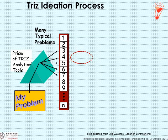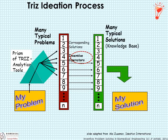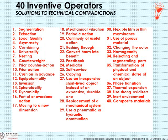I presented the same principle in the first lesson using a slide adapted from Ideation International, in which a specific problem — my problem — is decomposed into its fundamental parts, for which exist corresponding solutions known as inventive principles, which can then be reconstructed to create a solution for my specific problem. When Altshuller analyzed the world's patents, he identified 40 general principles of invention, which he defined in terms of 40 inventive operators. These are solutions to technical contradictions.